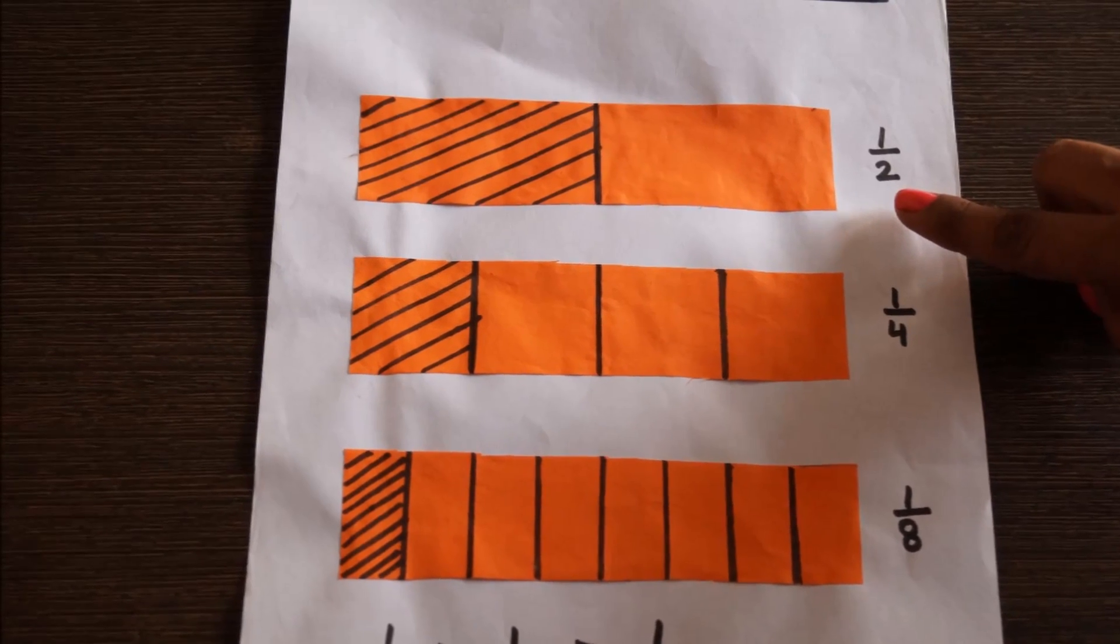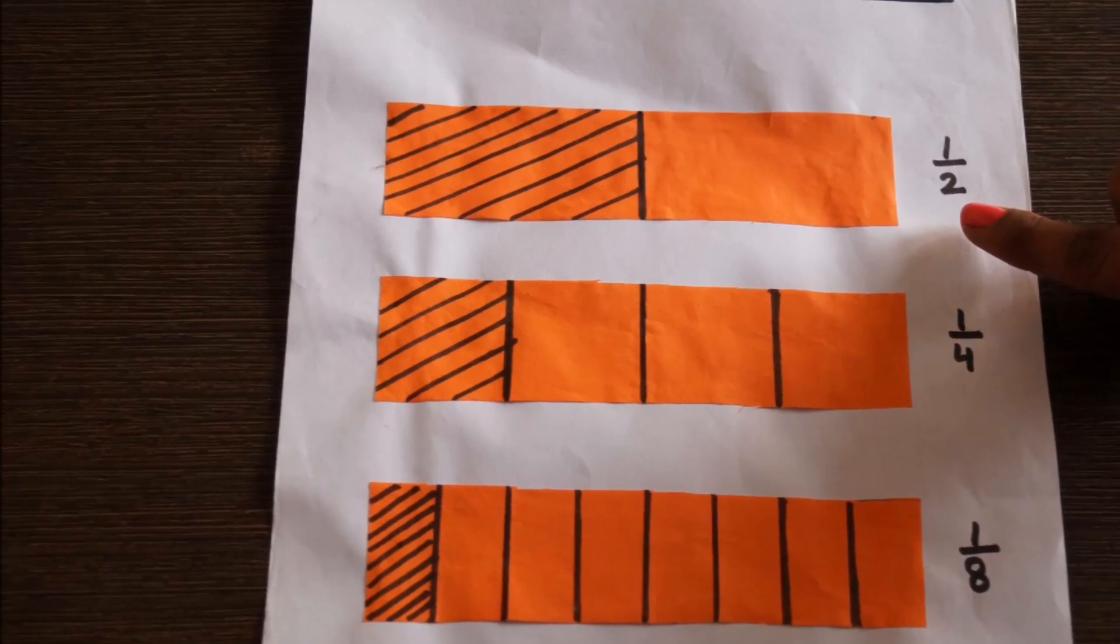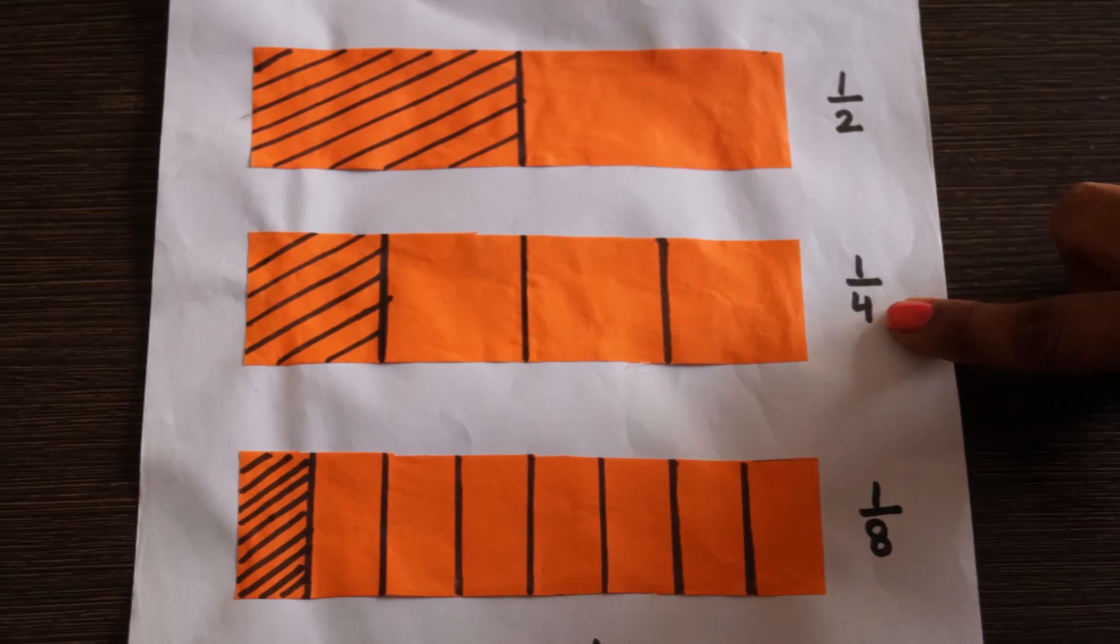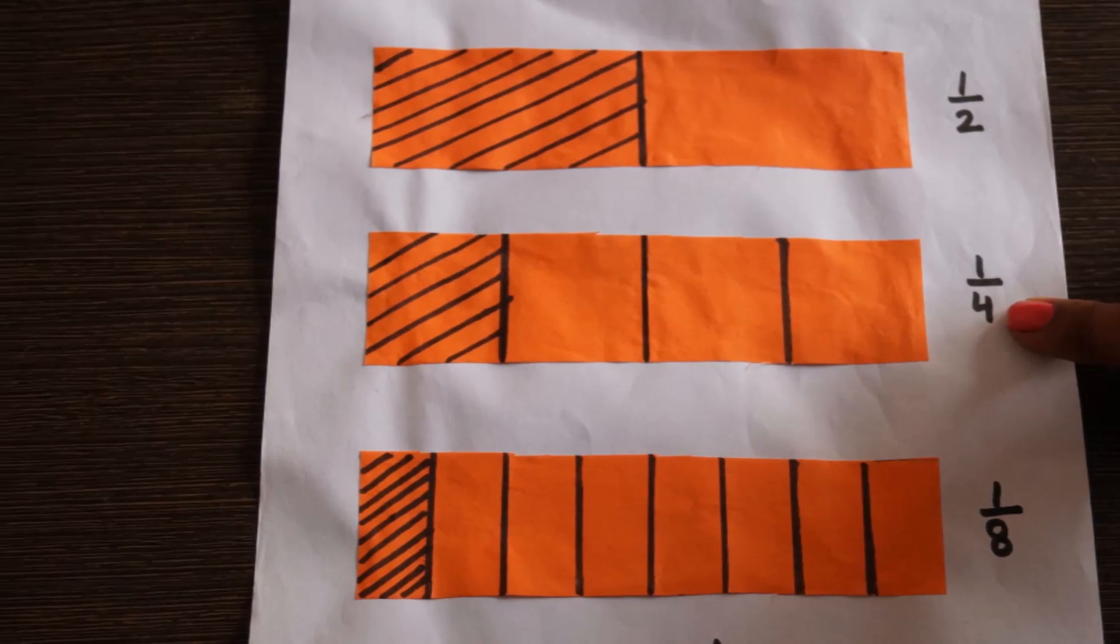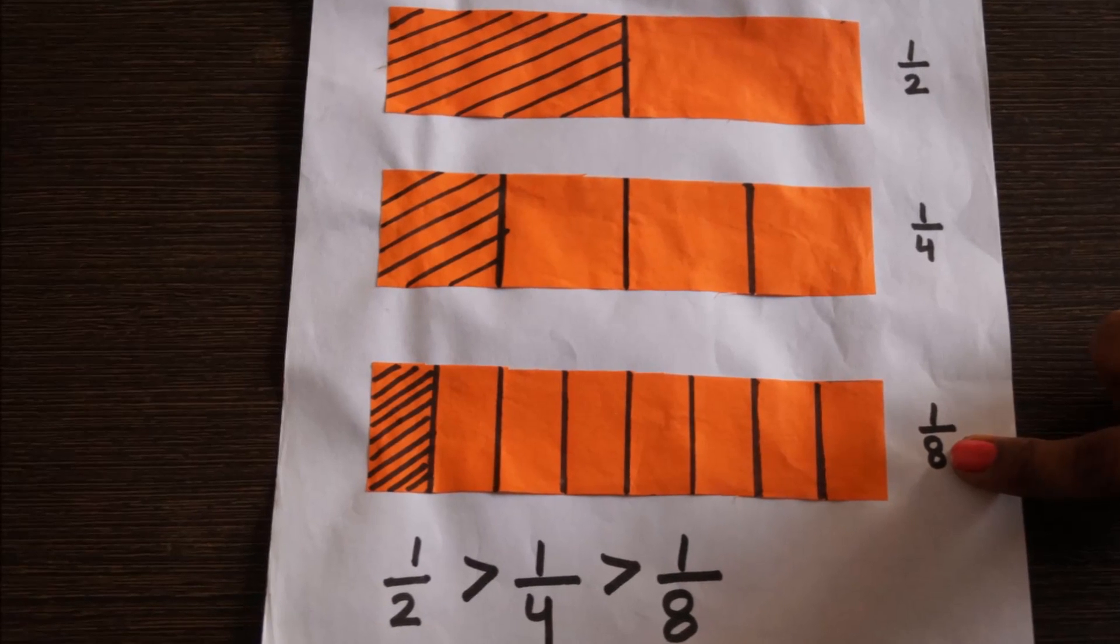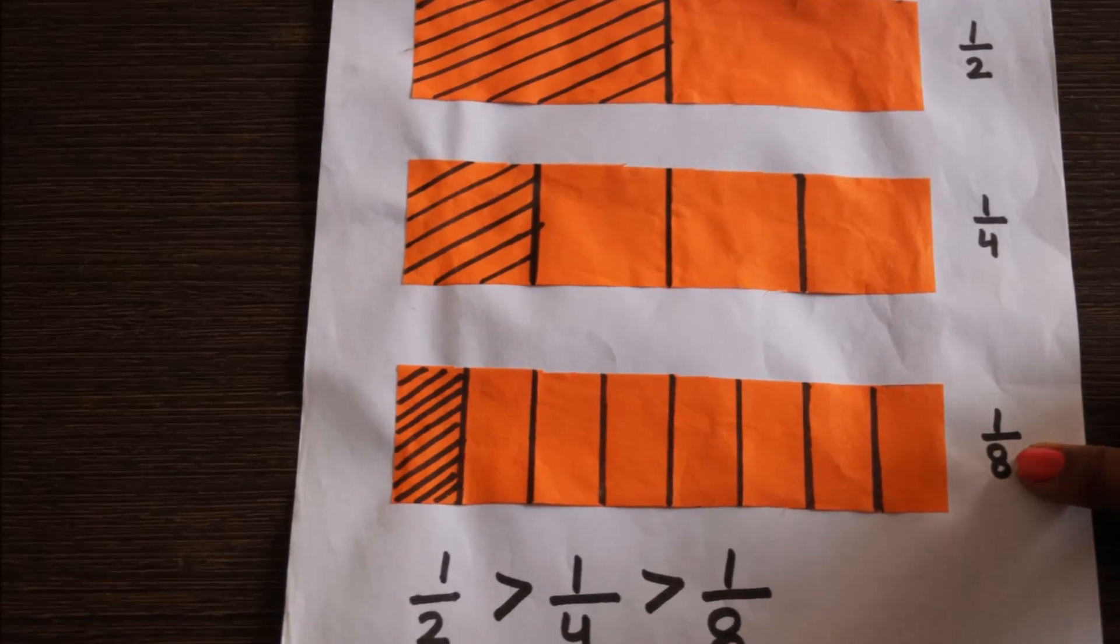So, we can easily compare that one upon two is greater than one upon four and one upon four is greater than one upon eight. Thank you.